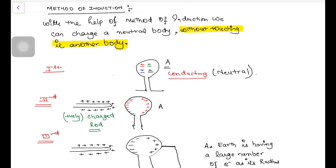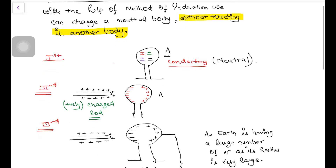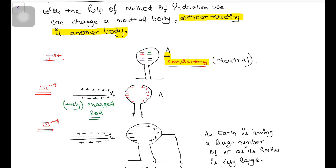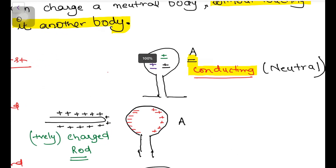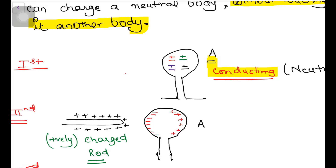But in this particular method, without touching, we can charge a neutral body. Suppose body A is neutral in nature and it is conducting. Conducting is a must — I am going to discuss why. Suppose this is the neutral body.